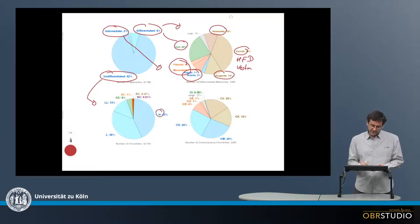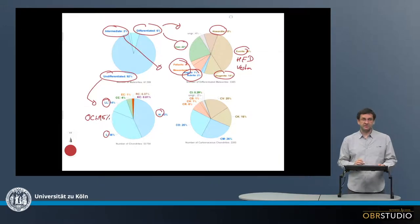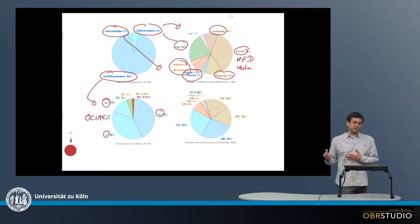And that among the chondrites, the H, L, and LL chondrites, so the ordinary chondrites, have about 95%. This is why they're called ordinary chondrites.